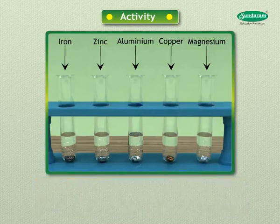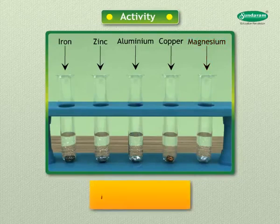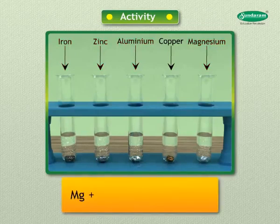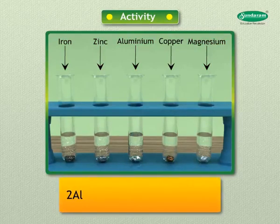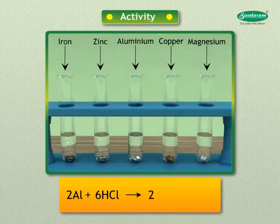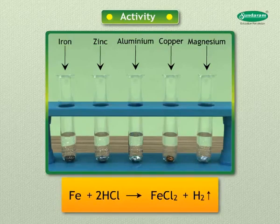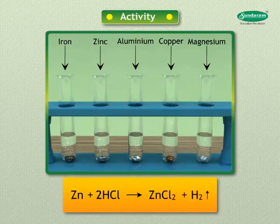The rate of formation of bubbles was fastest in case of magnesium. Reactivity decreases in the order: magnesium > aluminium > zinc > iron. Mg + 2HCl → MgCl₂ + H₂; 2Al + 6HCl → 2AlCl₃ + 3H₂; Fe + 2HCl → FeCl₂ + H₂; Zn + 2HCl → ZnCl₂ + H₂.